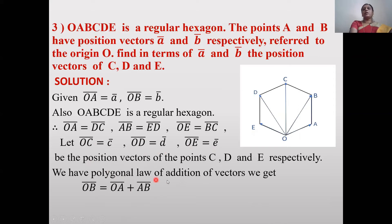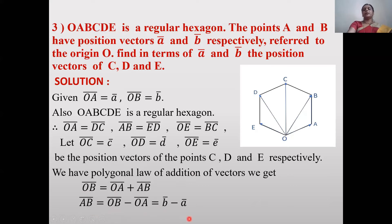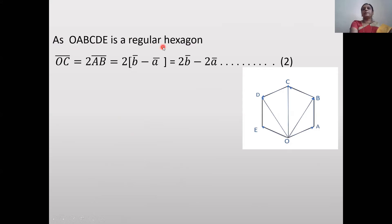Applying triangle law of addition: OB̄ = OĀ + ĀB̄, so ĀB̄ = OB̄ - OĀ = b̄ - ā. Since OABCDE is a regular hexagon, OC̄ = 2·ĀB̄ (OC is a diagonal, same direction as AB). So OC̄ = 2(b̄ - ā) = 2b̄ - 2ā.